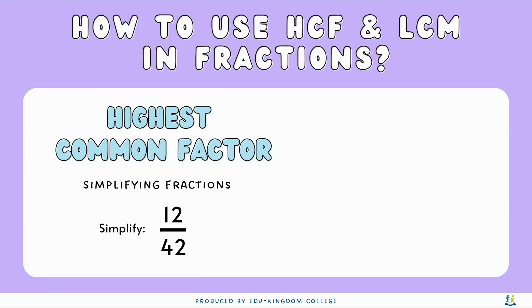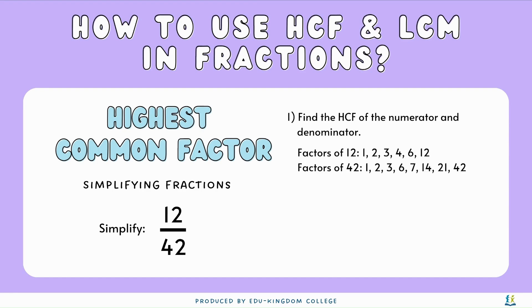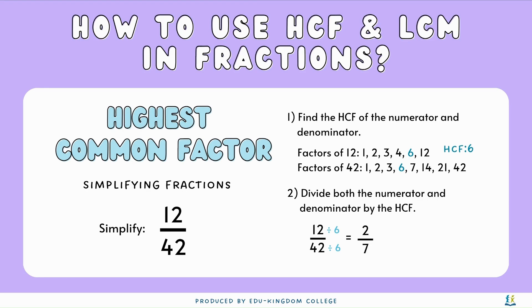Now that we have learned HCF and LCM, how can we use them with fractions? Highest common factor is used to simplify fractions. For example, simplify 12 over 42. First, we need to find the HCF of the numerator — the number on top — and the denominator — the number on the bottom. The factors of 12 and 42 are listed and the highest common factor is going to be 6. Now we divide both the numerator and denominator by 6: 12 divided by 6 and 42 divided by 6, giving us a new fraction of 2 over 7.